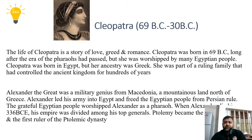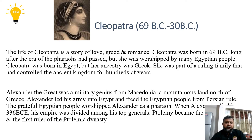Alexander the Great was a military genius from Macedonia, a mountainous land north of Greece. Alexander led his army into Egypt and freed the Egyptian people from Persian rule. The grateful Egyptian people worshipped Alexander as a pharaoh. Alexander died in 323 BC and his empire was divided amongst his top generals. Ptolemy was one of those generals — he took control of Egypt and became the first ruler of the Ptolemaic dynasty.